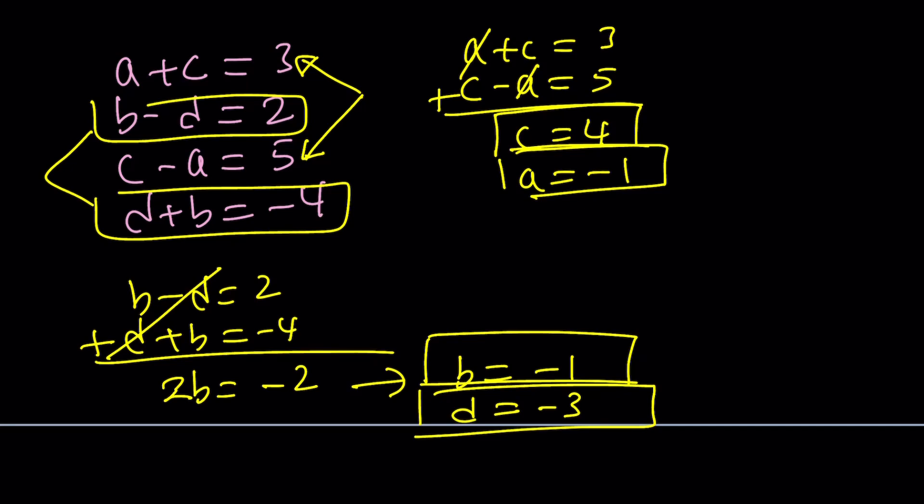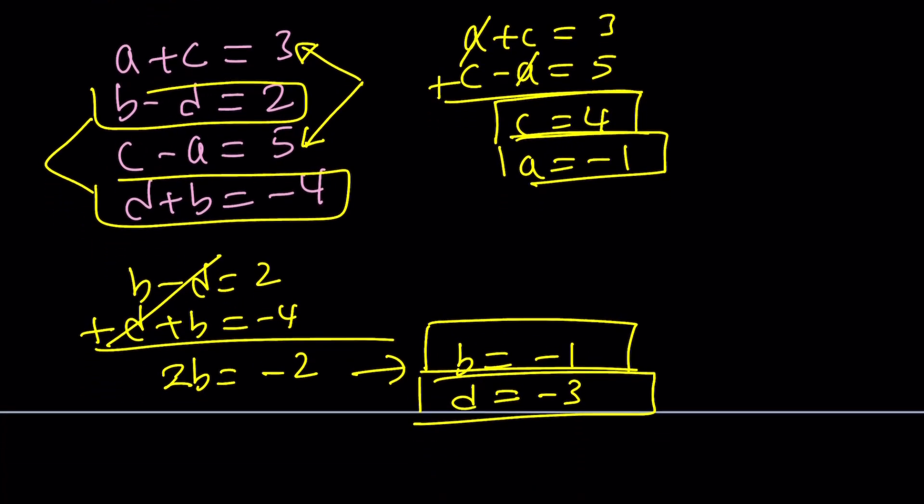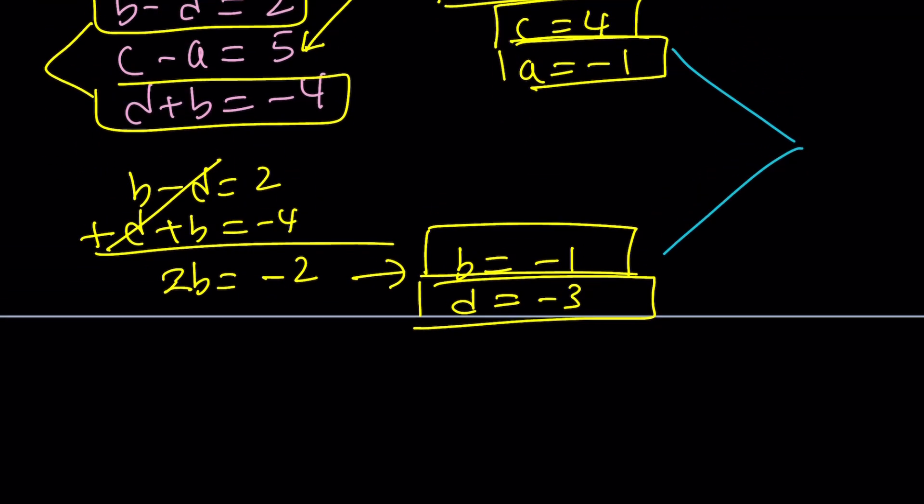These are the values. What's interesting about the system is that we kind of find A and C together but A and C don't belong to the same number. We get the real part of Z and then the imaginary part of W because of the way the system is given. I especially wanted to give it to you this way because you'll see in a little bit why that's the case. So we got everything we need. Z is equal to negative 1 minus i and W is 4 minus 3i.